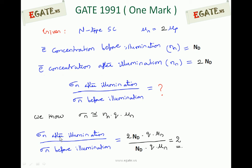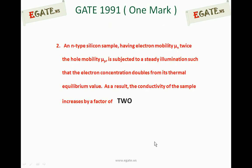Substituting the values to get the ratio: sigma_n after illumination uses Nn = 2Nd, so replace Nn with 2Nd; the other two terms remain the same. Sigma_n before illumination uses Nd. So the ratio simplifies to 2. The correct answer for this question is 2.